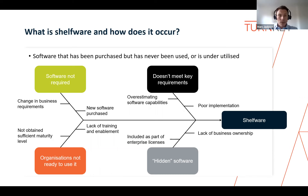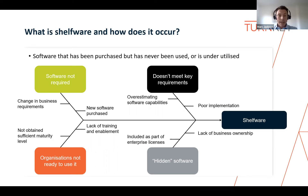Next, the contributing factor in the top right: 'doesn't meet key requirements.' A company may purchase software with high expectations, only to realize later it cannot meet their specific needs, leading to the software being shelved. This can happen due to a lack of research on the software's capabilities, poor communication between departments regarding must-have requirements, or a poor implementation that results in incorrect configuration, causing frustration among end users and disengagement.